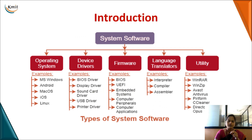Now we will see what is a system software. This particular software will make our system function properly, and the four most important system software is your operating system, and the next one is device drivers. We want a particular input or output device to be functioning properly, so just connecting a printer will not work out — I need a corresponding software to be installed. Similarly, if you want embedded systems or some other peripherals to be working properly, we go for firmware, and we even have language translators, as we write code in a high-level language it has to be converted to a language understood by the system. And to protect our system, we even have utility programs like antivirus and related tools.